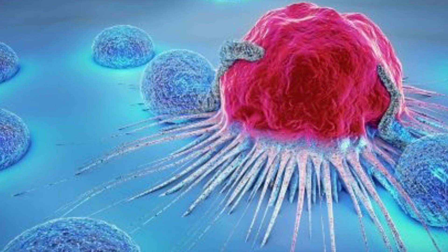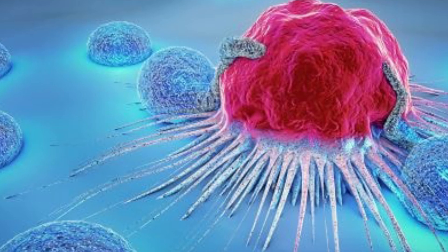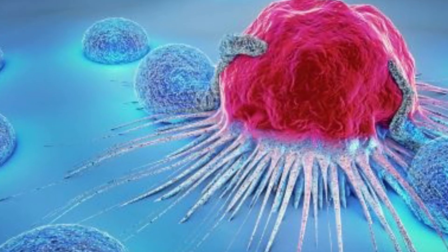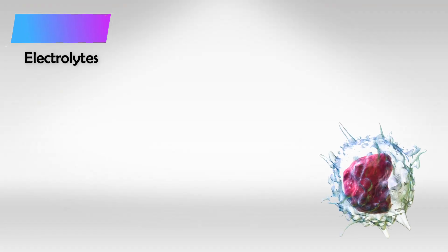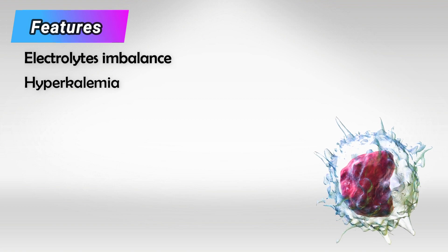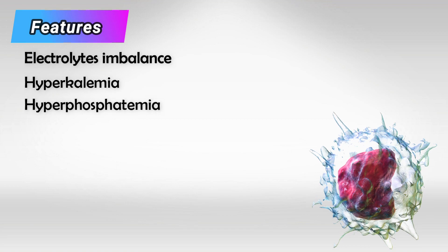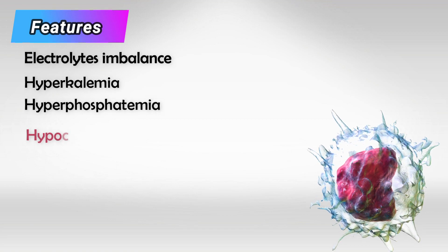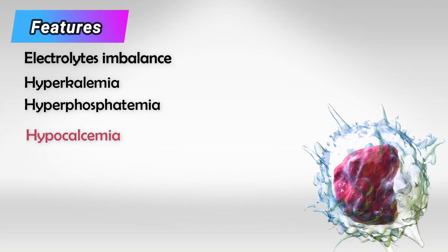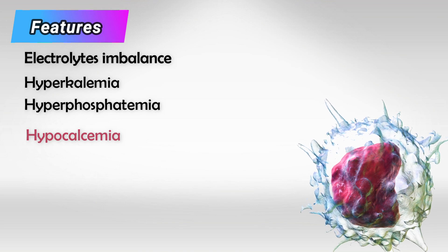All of that potassium, phosphate, calcium, and other electrolytes that were once entrapped within these cells will now be in the bloodstream. This causes a significant rise in potassium with hyperkalemia and arrhythmias. Phosphate will also rise drastically, and it will cause sequestration of calcium, leading to hypocalcemia along with hyperphosphatemia.